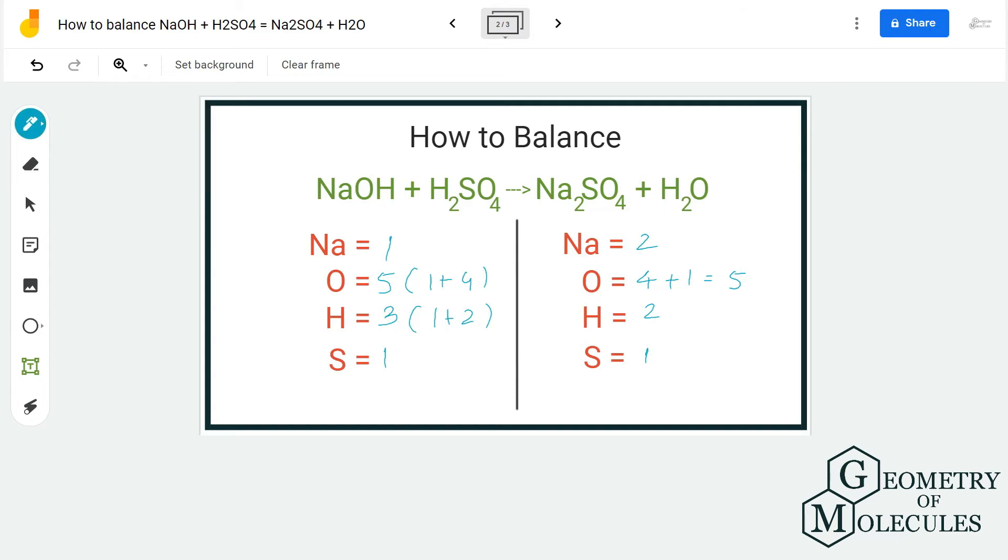So now we have to update our reactant side first and check if it matches with product side. So after adding 2 over here, I have 2 atoms of sodium, and here we are also going to update the rest of the atoms here.